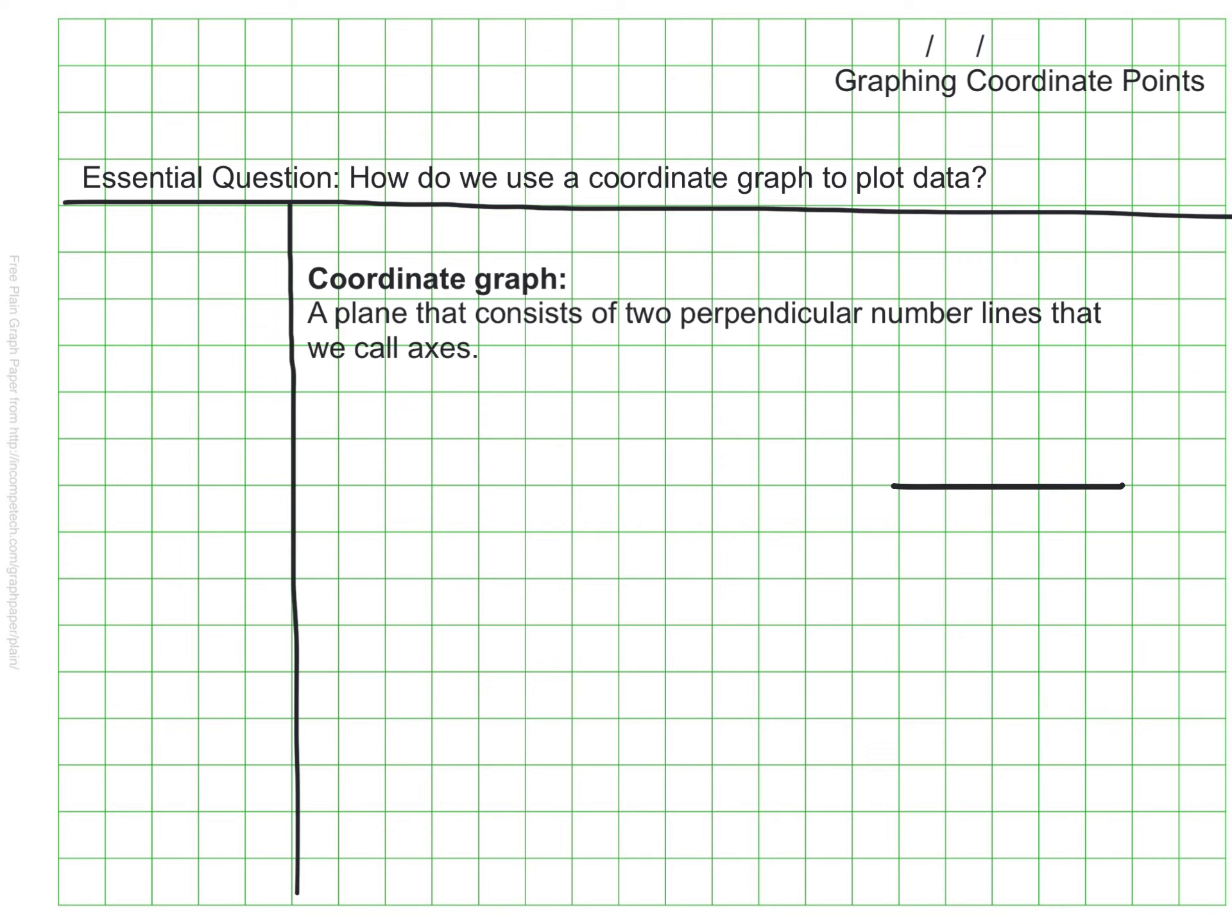That's not very straight vertical line. Let's try that again. There we go. One of our axes is the x-axis. The x-axis is the horizontal number line. So it's the one that's over here. That's the x-axis.